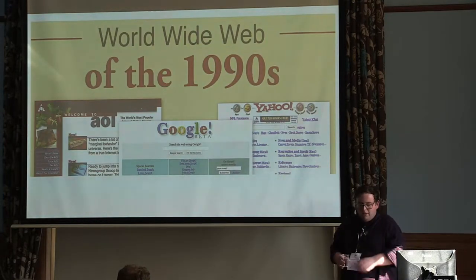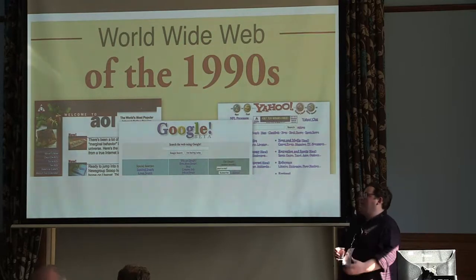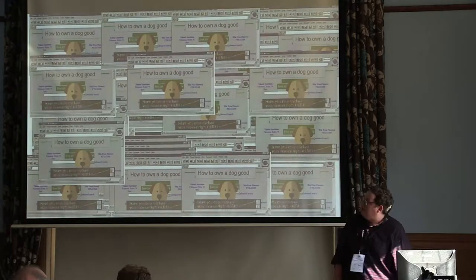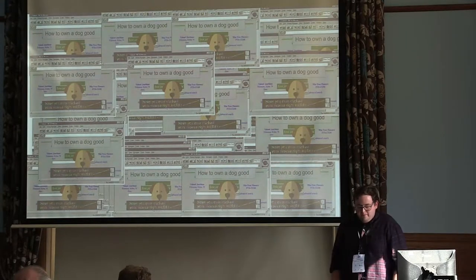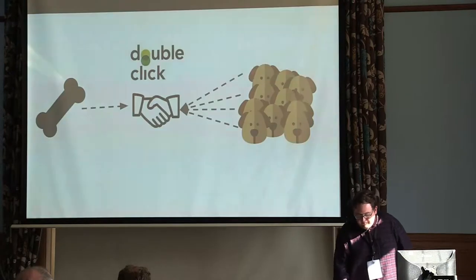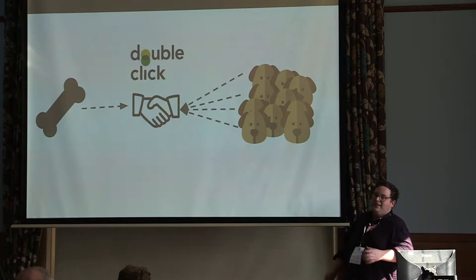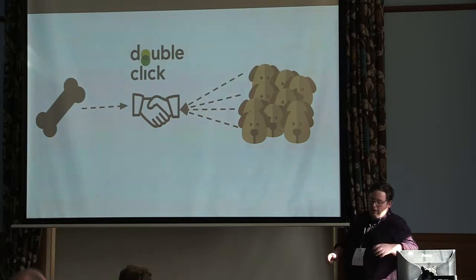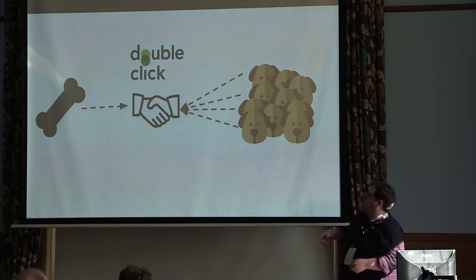Through the 90s, the web started getting a lot bigger. Companies like Yahoo were getting really massive, Google was coming out, and AOL was getting pretty big too. There were lots of people making websites. How are these dog treat shop owners supposed to keep track of all these websites, build relationships, and make sure these websites are putting the banners they want on? So that means a new type of company came into the industry: Ad Networks.